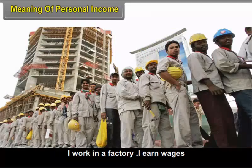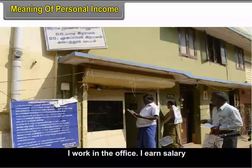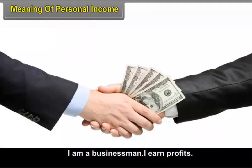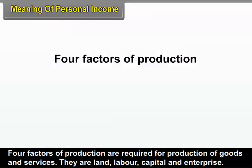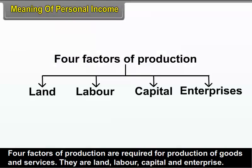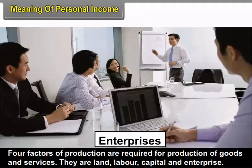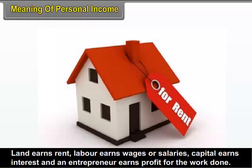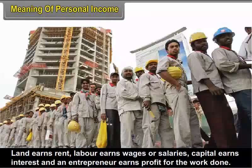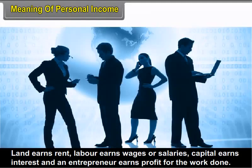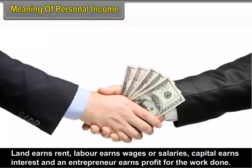I work in a factory and earn wages. I work in an office and earn salary. I am a businessman and earn profits. Four factors of production are required for production of goods and services: land, labor, capital and enterprise. Land earns rent, labor earns wages or salaries, capital earns interest, and an entrepreneur earns profit for the work done.